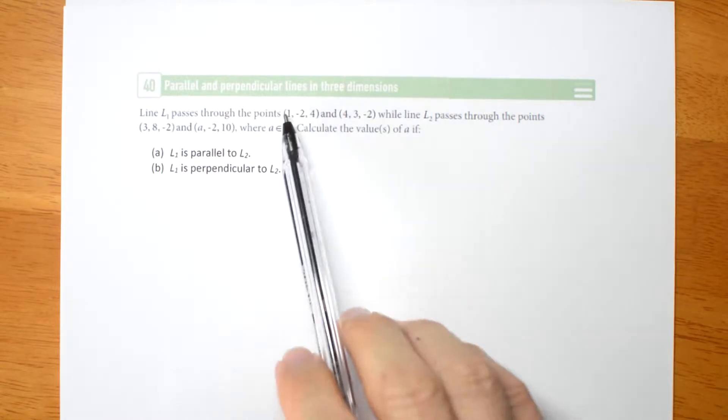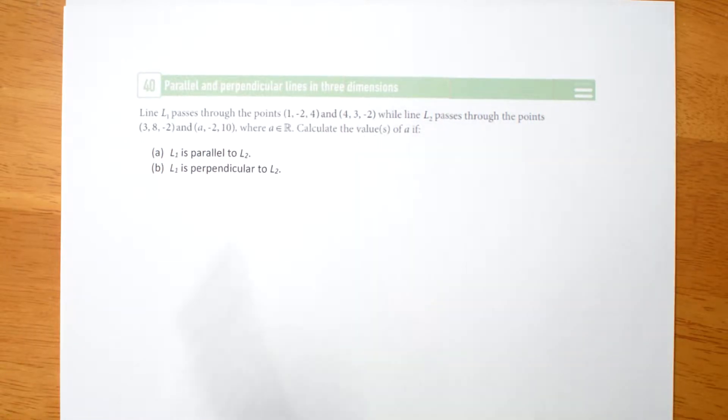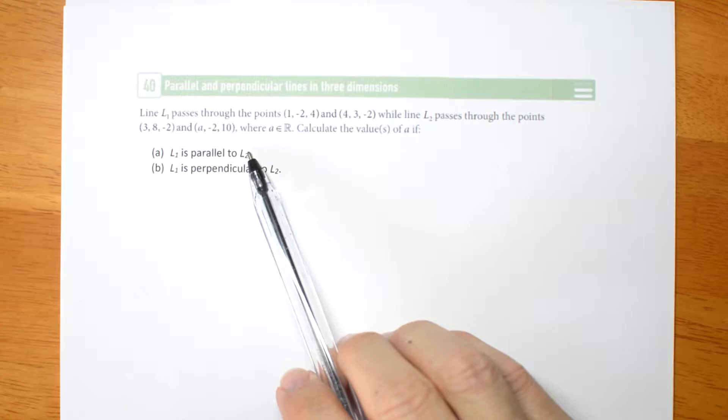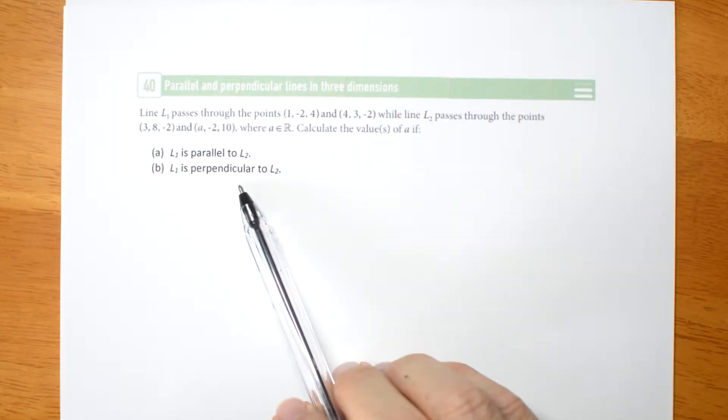Line L1 passes through these two points. Line L2 passes through these two points. Notice the A. We have to calculate the value or values of A that make the two lines parallel or make the two lines perpendicular.